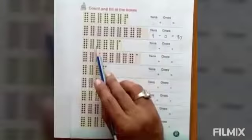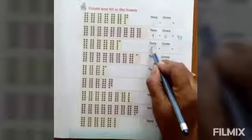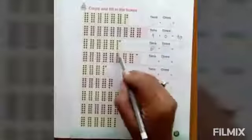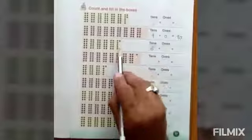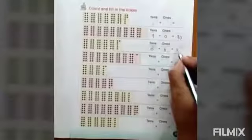Now in third box, 5 boxes are given of 10. So we will write 5 in tenths and 6 dots are given in 6 box. So 6 will be written on 6 ones. It is 56.